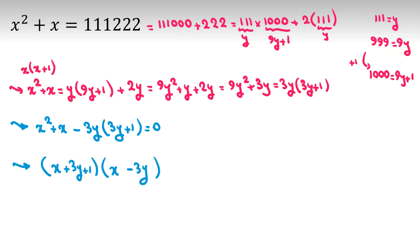Then it will be exactly this part. It equals 0. So first term is 0 or second term. The first term is 0: x plus 3y plus 1 is 0. Second term is 0: x minus 3y is 0.